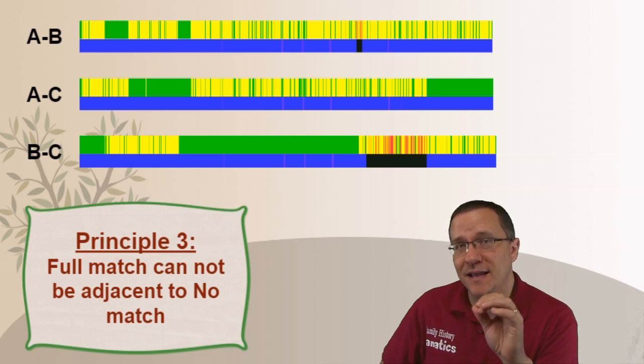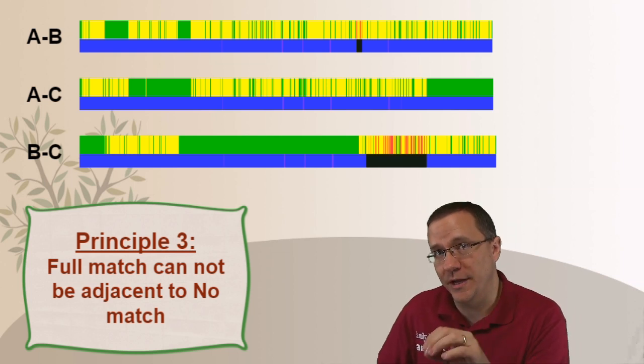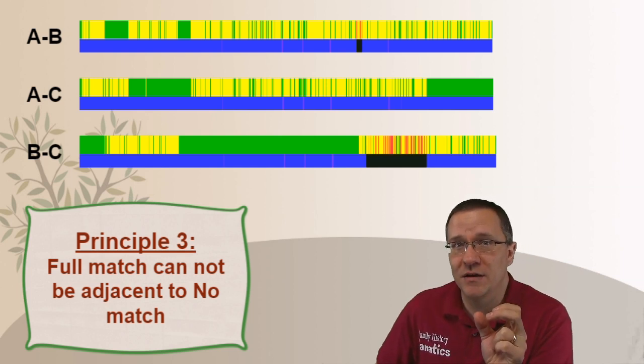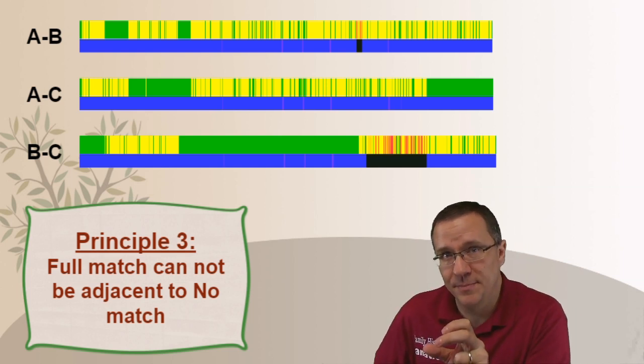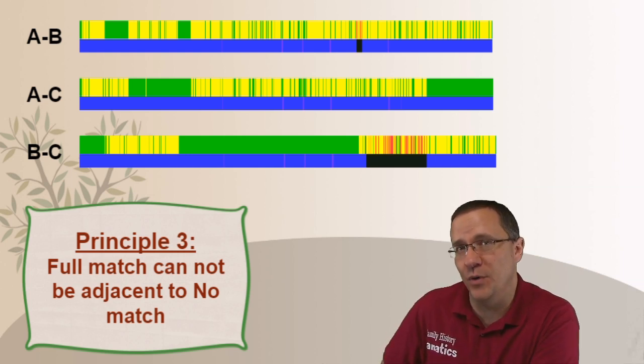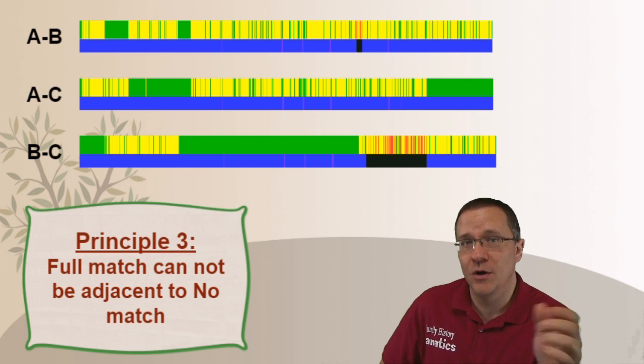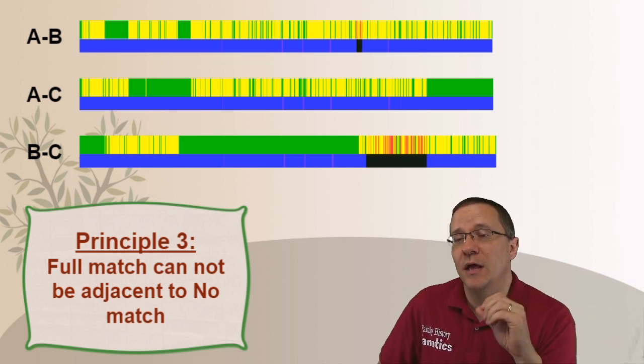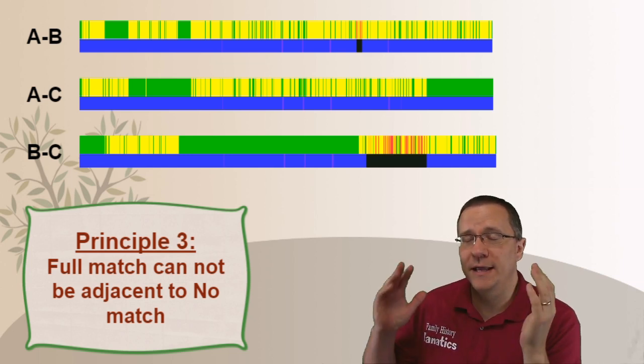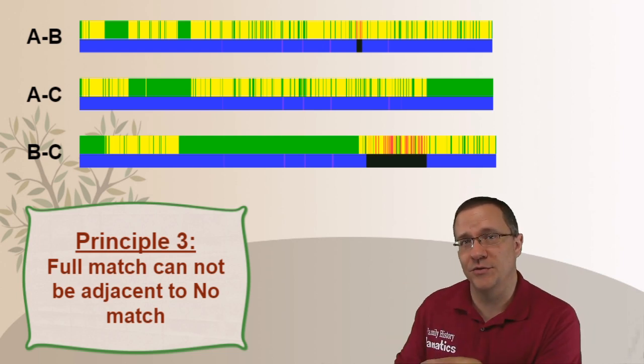And it tells us that a full match cannot be adjacent to a no match. That would be a color region one cannot be adjacent to a color region three. Or you can't have a solid green followed by a bunch of red. There has to be some yellow in between those two. There has to be a transition point. Now you can start a chromosome with either red or full green or it can start with a yellow. And you can end a chromosome with a red or a full green or even with a yellow. But inside you can't go from green to red. You always have to go to yellow in between those colors.